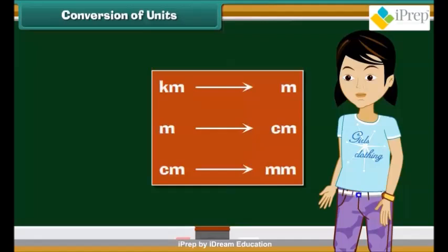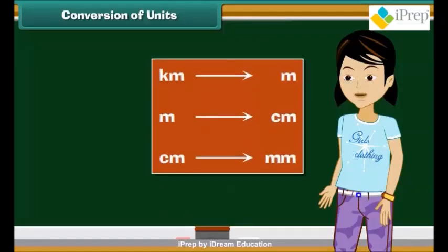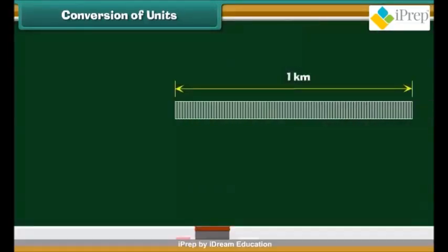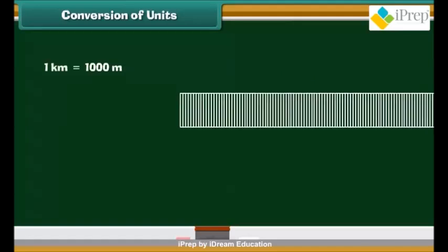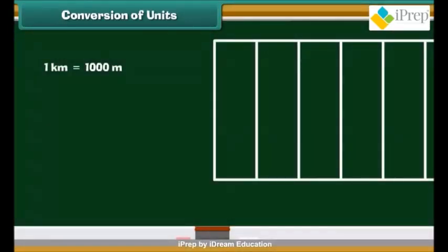Friends, let us now learn how to express distances given in one unit in other units. To measure distances smaller than a kilometer, 1 kilometer is divided into 1000 equal parts and each part is regarded as a unit. This is called a meter. We can say that 1 kilometer equals to 1000 meters.